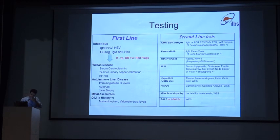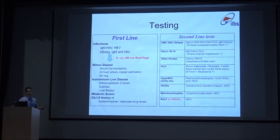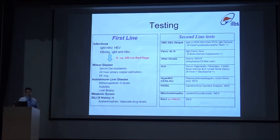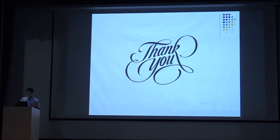In summary, the diagnostic approach starts with hepatitis A, E, and B as standard. If there are red flags for Wilson's or autoimmune disease, proceed with those tests, drugs history, and metabolic screening — especially in younger children. If everything is normal, consider HSV, adenovirus, HHV6, HLH, hyperammonemia, fatty acid oxidation defects, or mitochondropathy based on history. If you have a recurrent or indeterminate ALF and logistics allow, consider whole exome sequencing. Thank you, and apologies for extending the time.